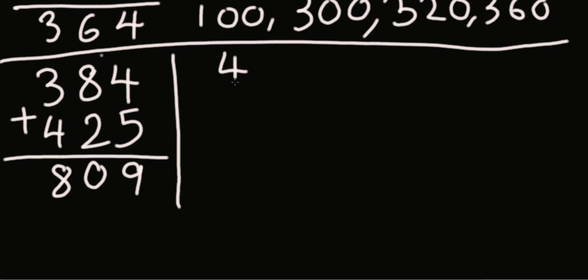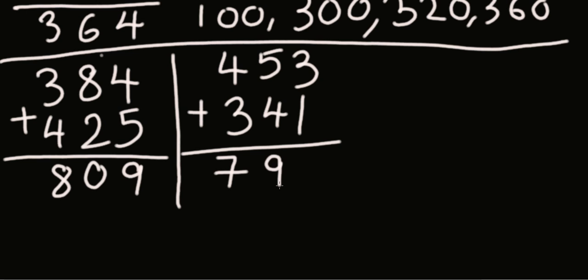Let's take another example: 453 plus 341. So 400, 700, 750, 790, 793, 794. And as I said, when there are small numbers like 3 and 1 you know it's 4, so you can just jump from 790 to 794.